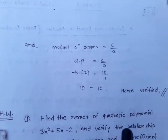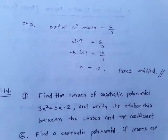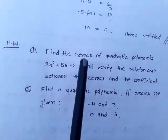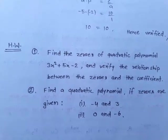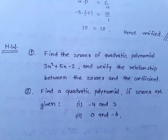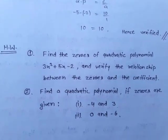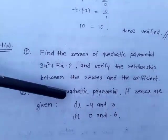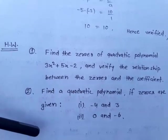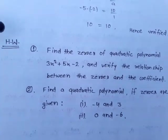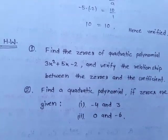Using this lecture you can solve your homework. Homework: (1) Find the zeros of the quadratic polynomial 3x² + 5x – 2 and verify the relationship between zeros and coefficients. (2) Find a quadratic polynomial if zeros are given: (a) –4 and 3, (b) 0 and –6. Based on this lecture you can solve this homework, and also try Exercise 2.2.